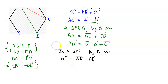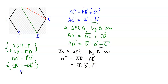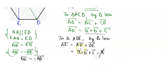AD vector is a vector plus b vector plus c vector, and DE vector equals minus of AB vector, which is minus a vector. So substituting: AE vector equals AD vector plus DE vector, and the a vector terms cancel out, giving AE vector equals b vector plus c vector.